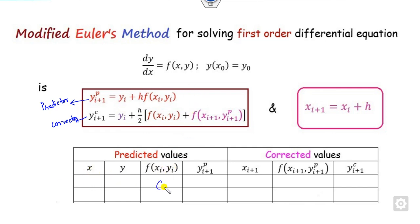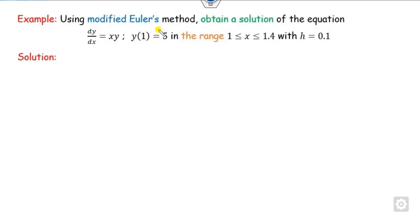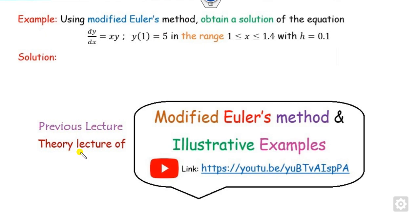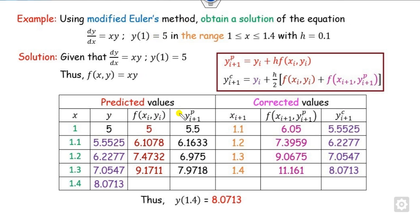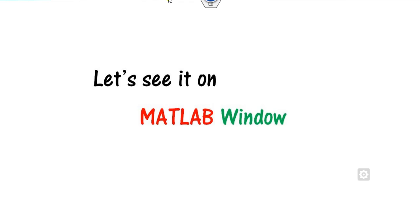Our target is to complete a solution table. How to complete this table manually we have seen in the last class, but our target here is to solve the problem with the help of the modified Euler method in MATLAB. Once you solve this problem manually, you will see a particular output. Our target is to complete this table to get the final output, and we will do the same thing in this MATLAB programming to match the theory and the practical lab.